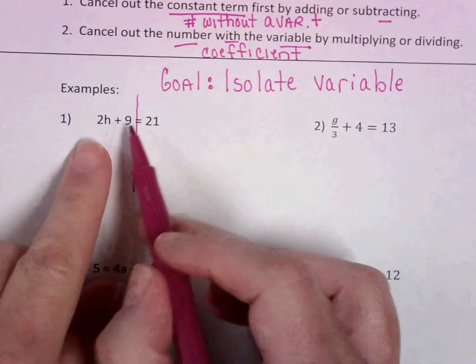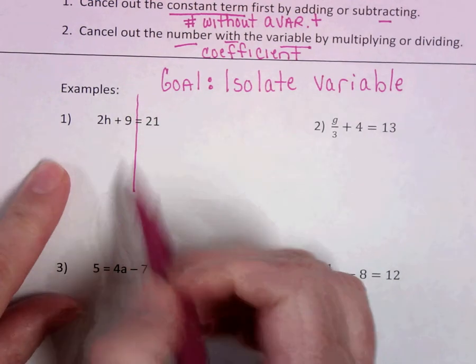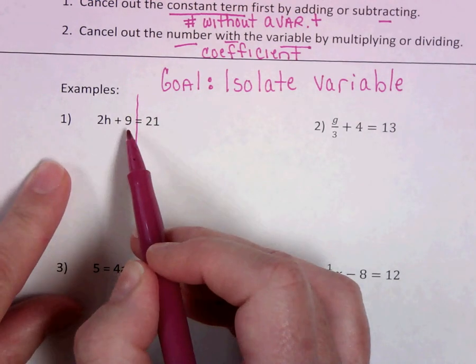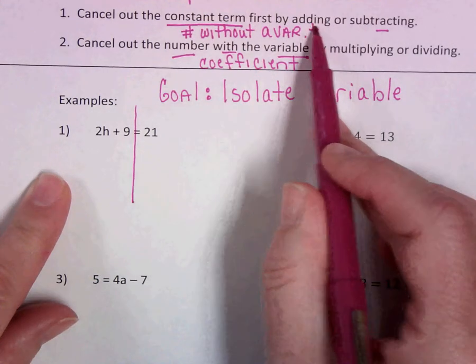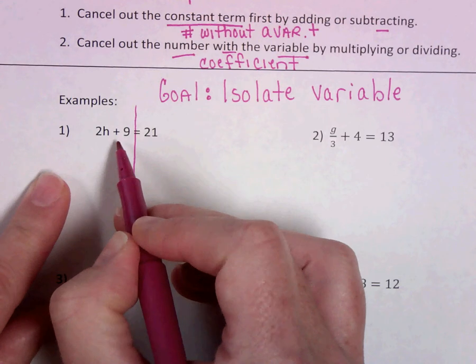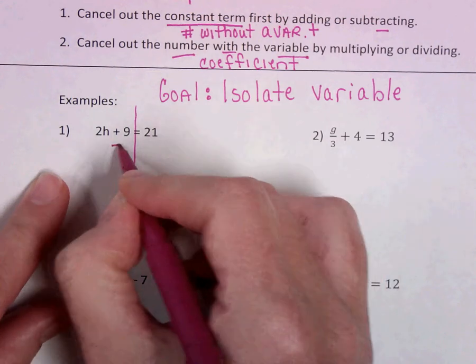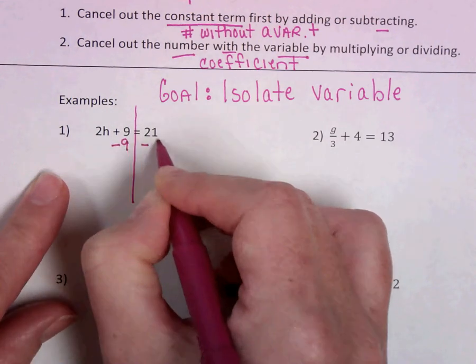We want to cancel out what's least attached first. This is the constant term. Nine is the constant term, so that's what we're going to cancel out first. Add or subtract. If this is plus nine, then we are going to subtract nine.